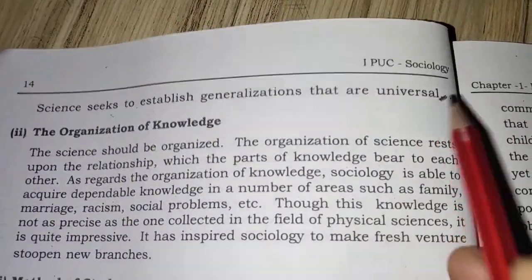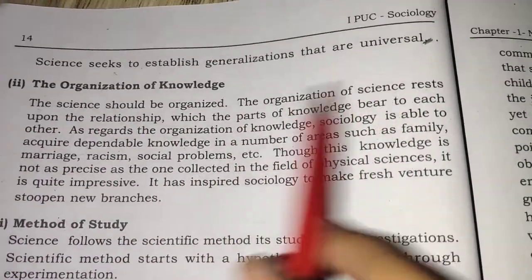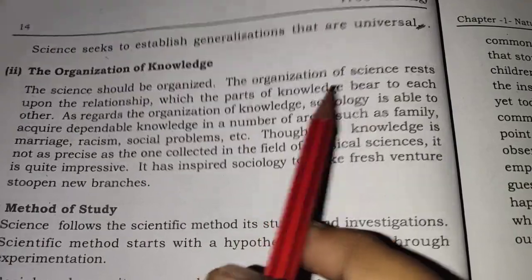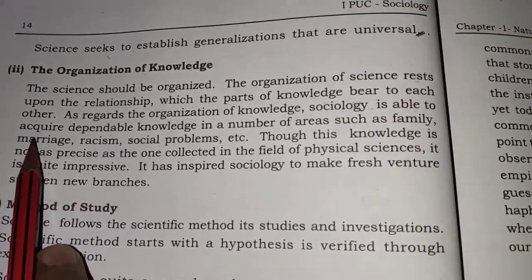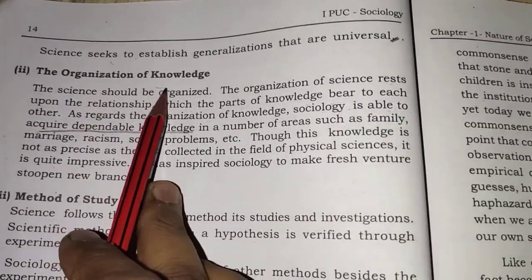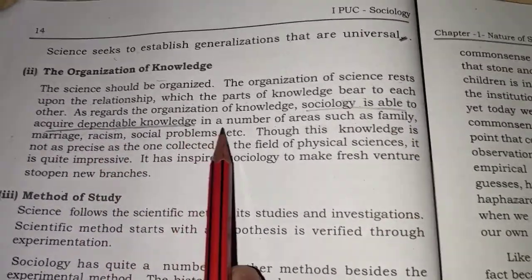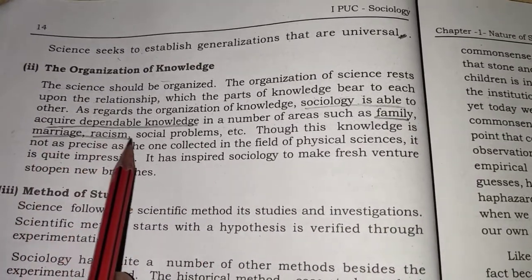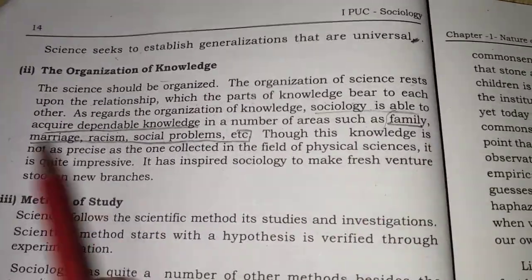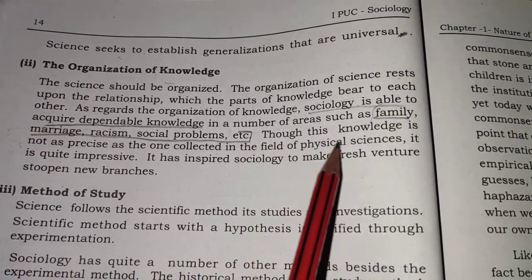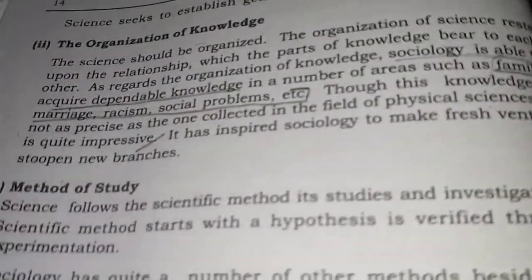The next criterion is the organization of knowledge. Science should be organized. The organization of science rests upon the relationship which the parts of social knowledge bear to each other. Sociology is able to acquire dependable knowledge in a number of areas such as family, marriage, racism, and social problems. Though this knowledge is not as precise as that collected in the field of physics, it is quite impressive, as we are talking about society.